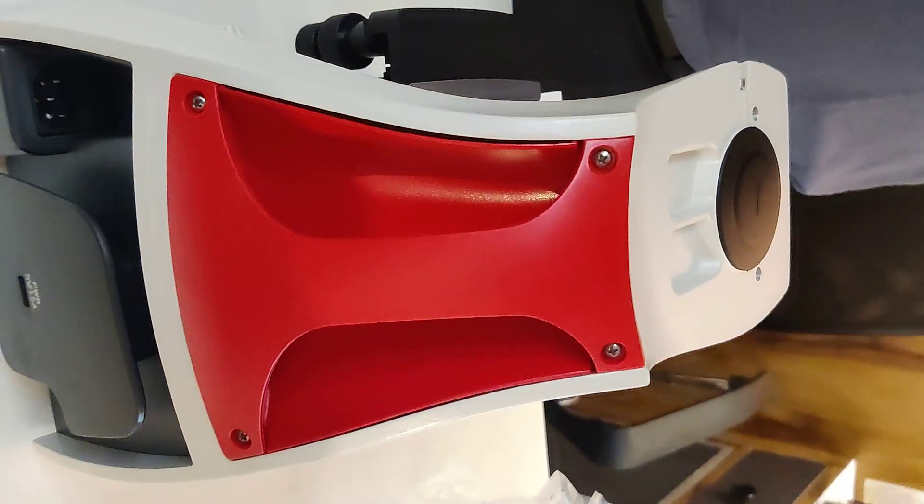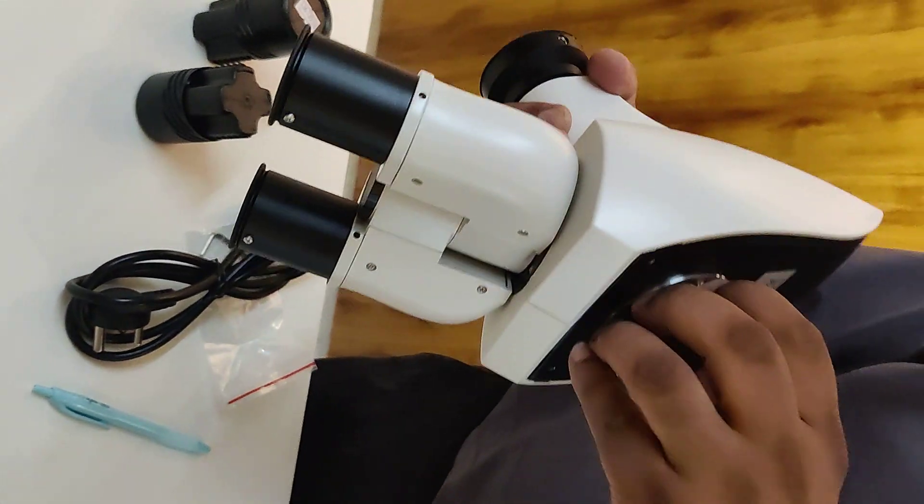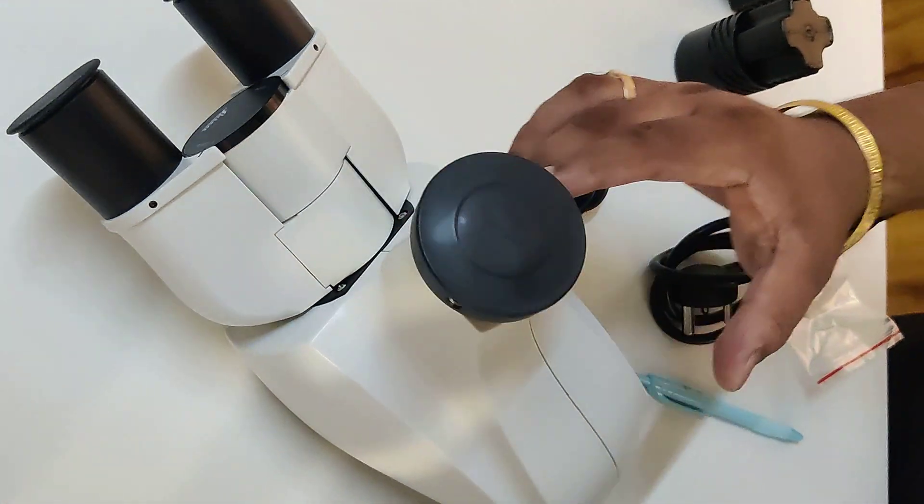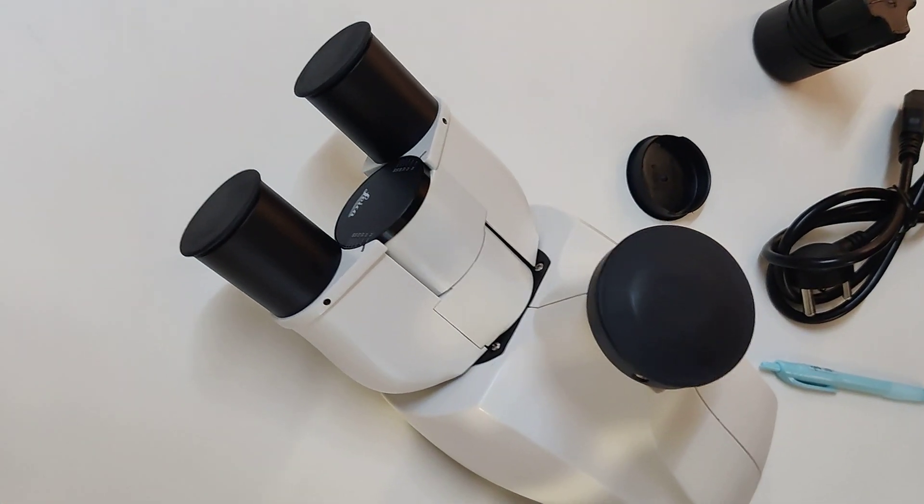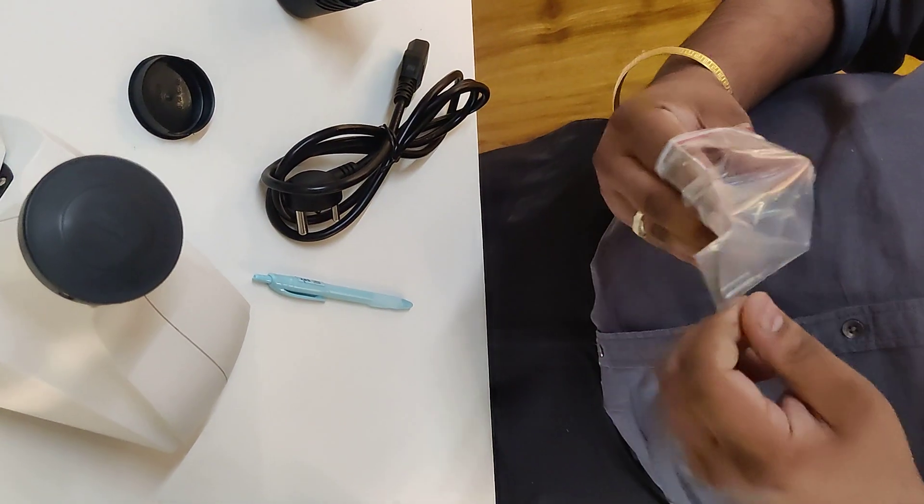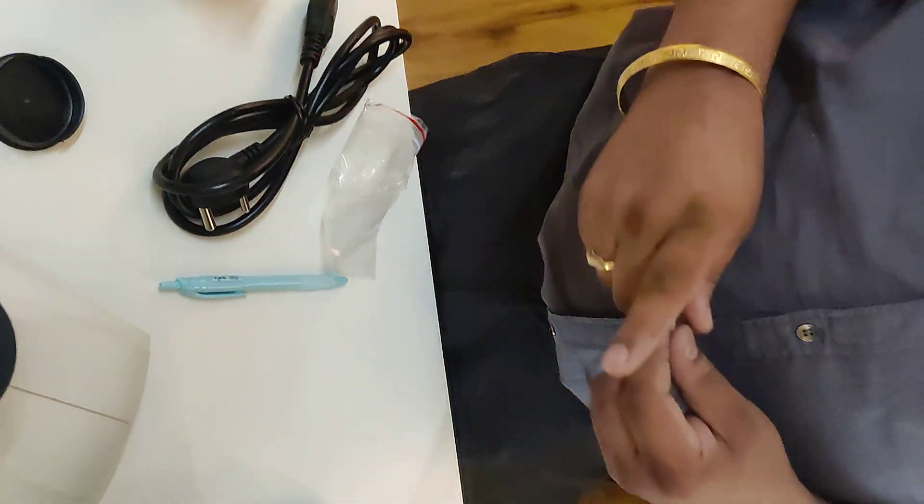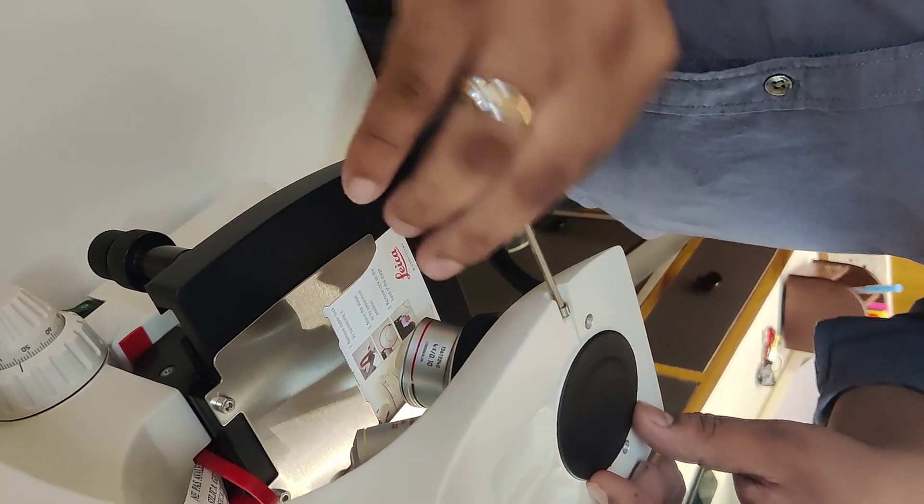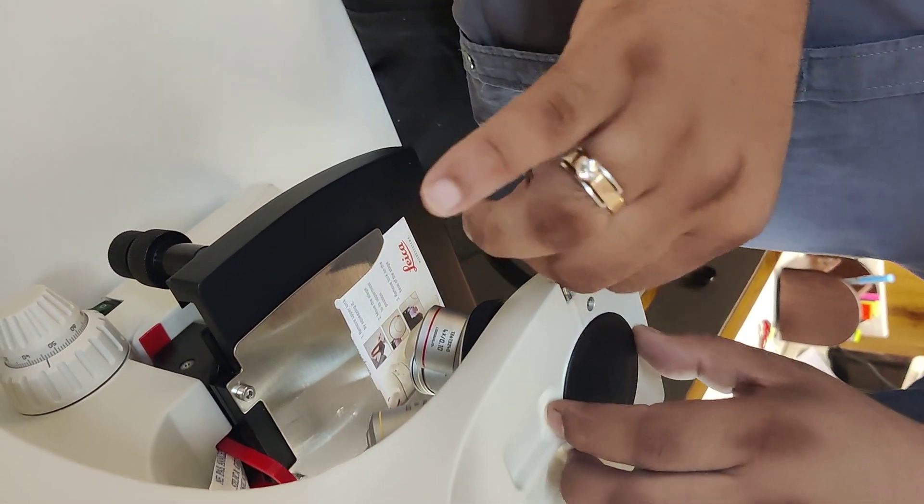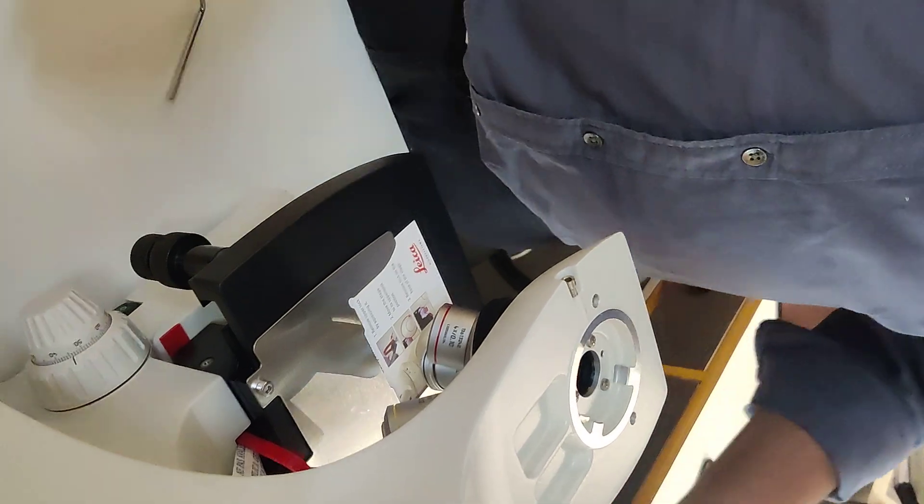This is the trinocular head. You can just take out the LNP and mount the head directly on the body.